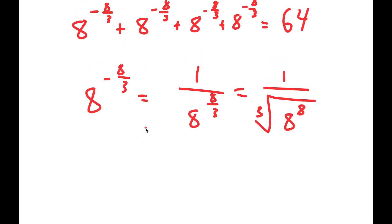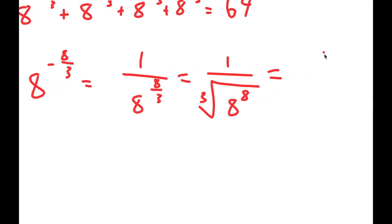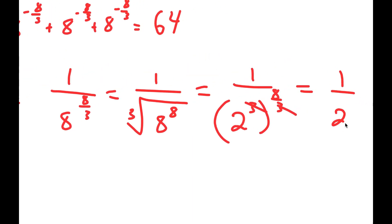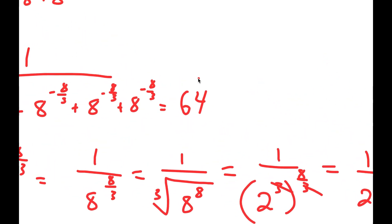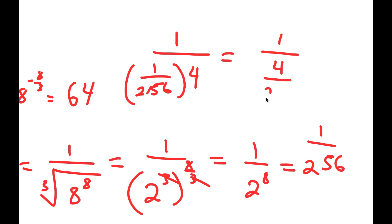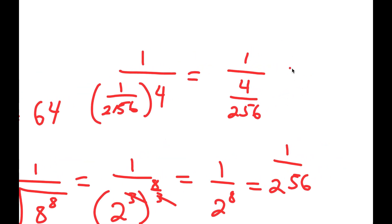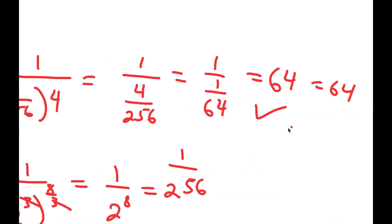For 8 to the power of 8 over 3, I can rewrite 8 as 2 to the power of 3. So I have 2 to the power of 3 to the power of 8 over 3, and the two 3s cancel out, giving me 1 over 2 to the power of 8, which equals 1 over 256. So I get 1 over 256 times 4, which equals 4 over 256, which equals 1 over 64. And this is equal to 64, meaning 64 equals 64 — our solution is correct.